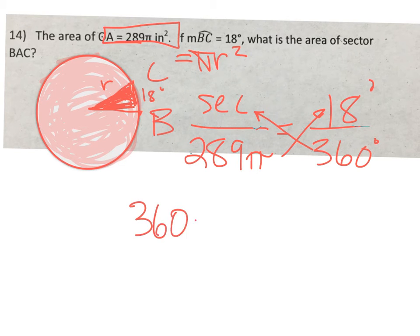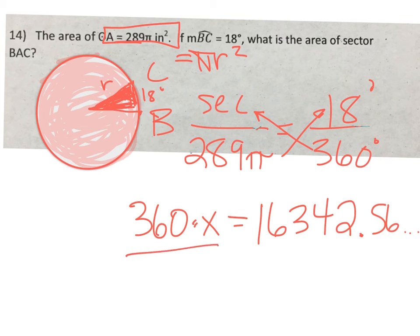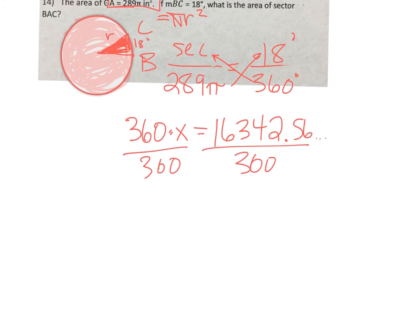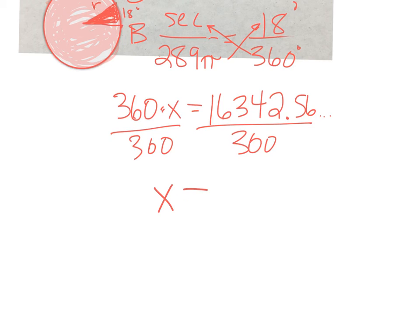360 times x, that's what we're looking for—the sector area—equals 18 times 289π, which is 16,342.56. And then dividing both sides by 360 gives me a sector area of 45.39 square inches.